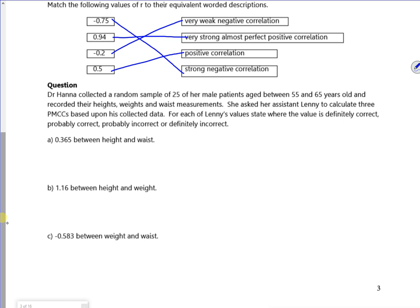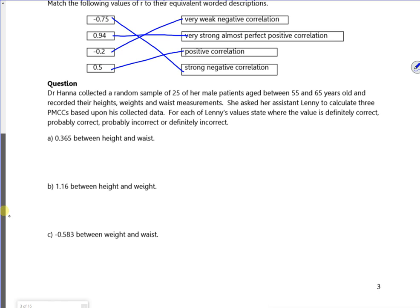Right, so let's have a look at this question then. So it says, Dr. Hannah collected a random sample of 25 male patients between 55 and 65, recorded their height, weight, and waist measurements. She asked an assistant to calculate three PMCCs based on it. So for each of the values state whether it's definitely correct, probably correct, probably incorrect, or definitely incorrect. So we've got two definites and two probabilities. So for A, you've got a positive correlation between height and waist. So yeah, there's a problem here. So I guess if it's larger in one dimension, it'll be larger in another.